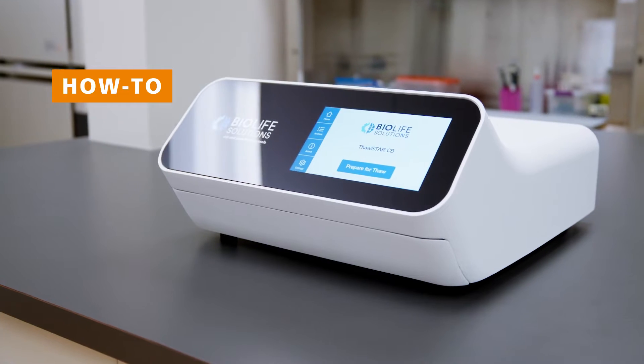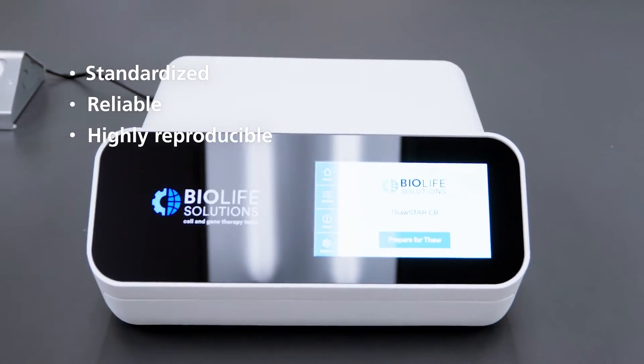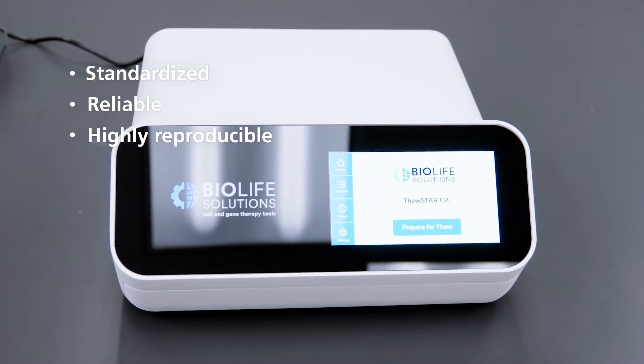The Thawstar CB automated thawing system permits standardized, reliable, and highly reproducible cell thawing as an alternative to a manual water bath-based method.